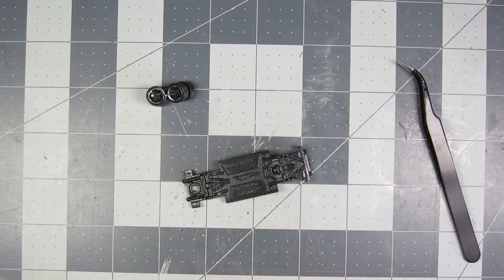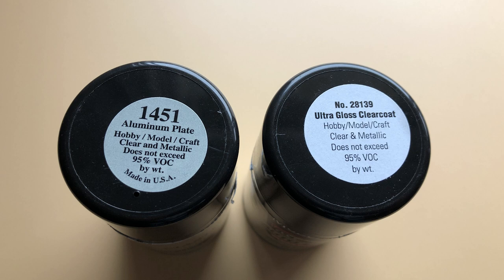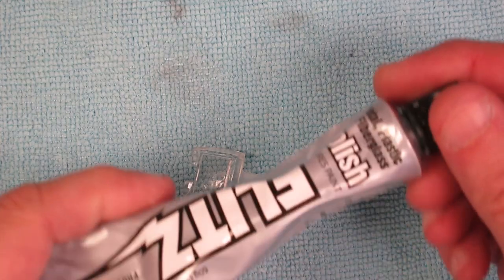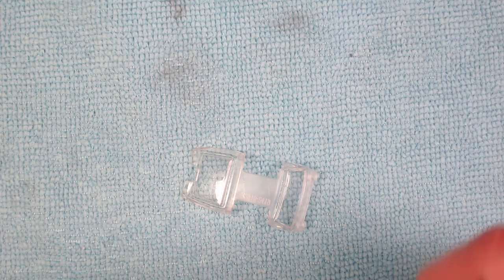And then once that was ready, I hit it with Model Master Aluminum Plate, and then went over that with the Ultra Gloss Clear Coat, the matching Model Master one. They're both lacquers. So then that's off drying.